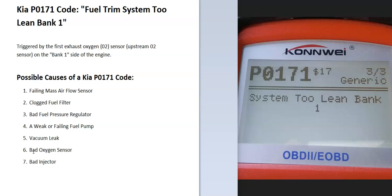I'm going to go over each cause and show you how to troubleshoot this. A lot of people automatically jump to the oxygen sensor — mainly the upstream bank 1 oxygen sensor — since this is what triggers it and tells the onboard computer there's an issue. But while that sensor could be bad, all it's doing is reporting how much oxygen was burnt off during combustion, so there might not be anything wrong with the sensor itself.